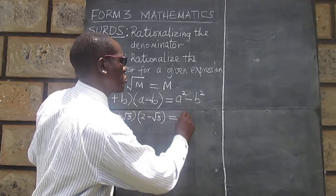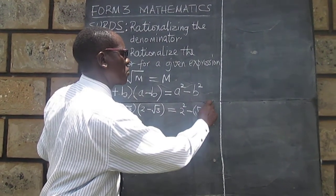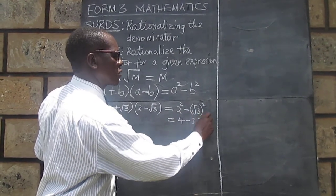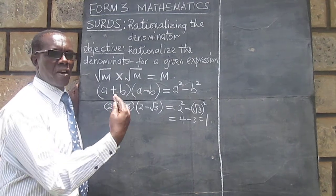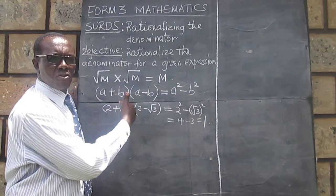So that when we remove these brackets we will get 2² minus (√3)². Like in this case we will get 2² minus (√3)² which will give us 4 minus 3 which is 1. The one we have gotten now will be rational so we need to apply the concept of difference of two squares.